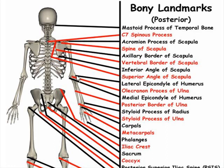Lateral epicondyle of the humerus, right here. Medial epicondyle of the humerus, right here. Olecranon process of the ulna — your elbow. Posterior border of the ulna, right here. Styloid process of the ulna. Carpals. Metacarpals. Phalanges.